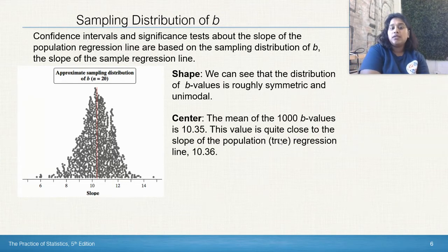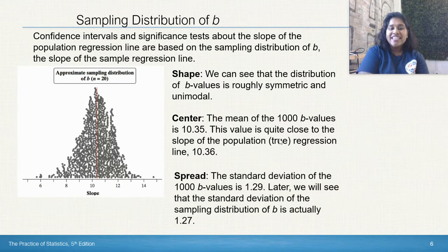The center of the thousand b values is 10.35. This value is quite close to the original slope. The spread, the standard deviation is 1.29, and later on, we're going to see that the standard deviation of the sampling distribution of b was actually 1.27.